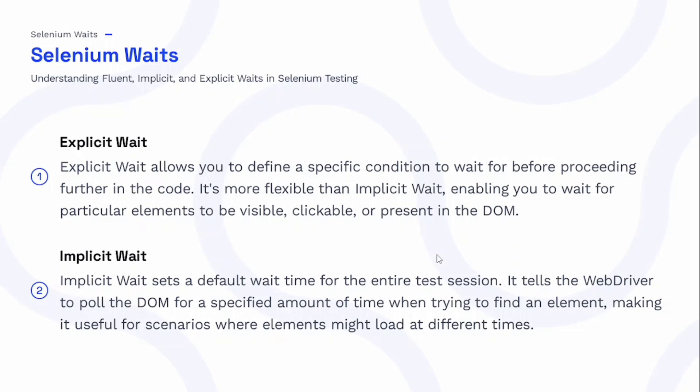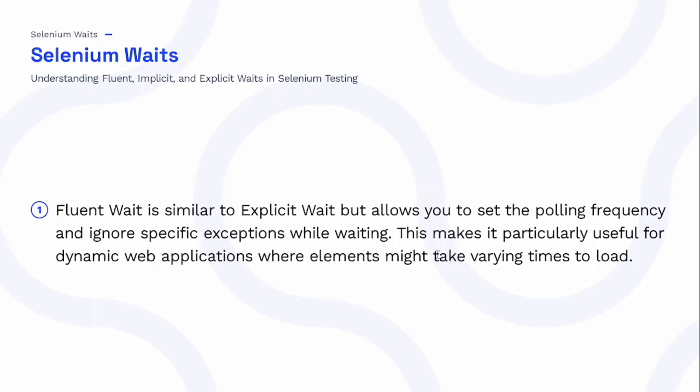Implicit wait sets a default wait time for the entire test session. It tells the WebDriver to poll the DOM for a specified amount of time when trying to find an element, making it useful for scenarios where elements might load at different times. Fluent wait is similar to explicit wait, but allows you to set the polling frequency and ignore specific exceptions while waiting, making it particularly useful for dynamic web applications where elements might take varying times to load.